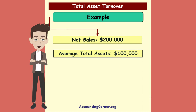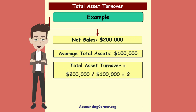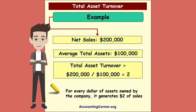Let's analyze an example. Net Sales of the company are $200,000 and average total assets are $100,000. Total Asset Turnover equals $200,000 divided by $100,000, which means Total Asset Turnover is 2. This means that for every dollar of assets owned by the company, it generates $2 of sales.